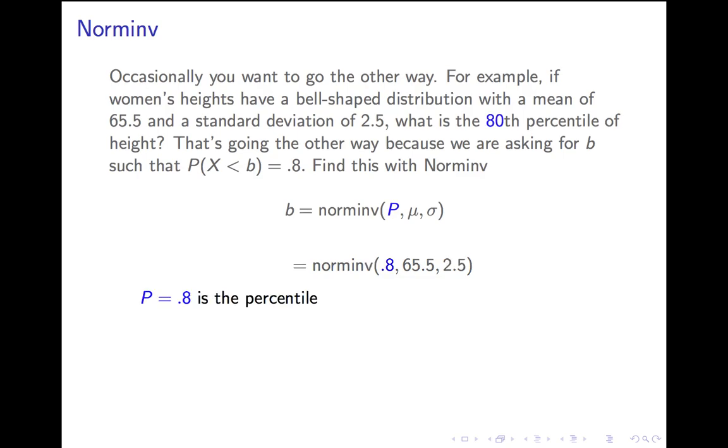So, in our case, we're looking at norminv .8, 65.5, 2.5, and that works out to 67.6. So, 67.6 is the 80th percentile of women's heights.